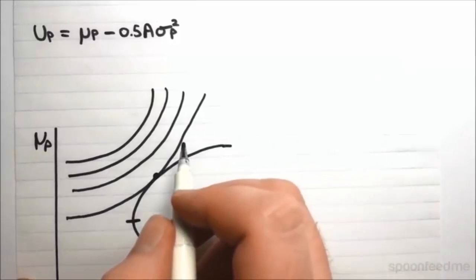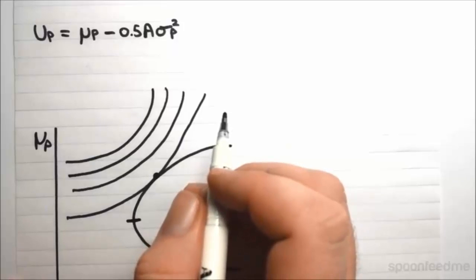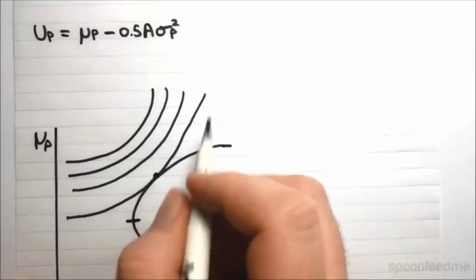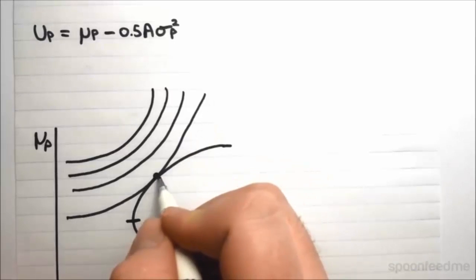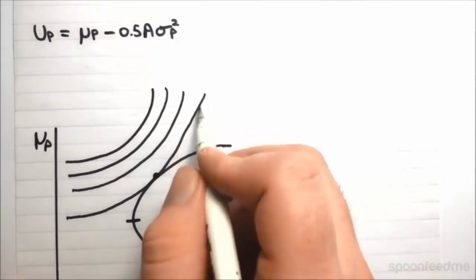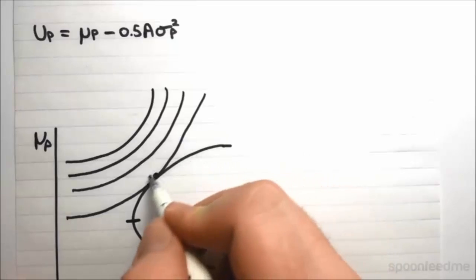So when we're looking for the optimal risky portfolio, the one that gives us the highest utility, we're looking for the portfolio which is at this point where the highest indifference curve just touches the efficient frontier.